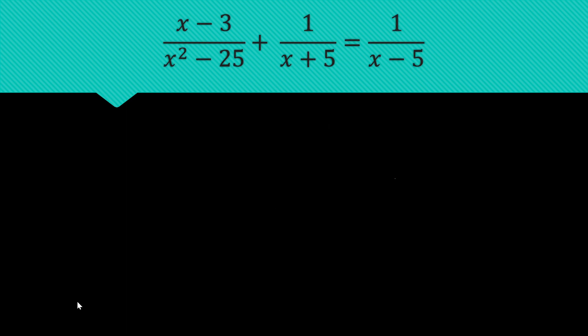So our next example would be x minus 3 over x squared minus 25 plus 1 over x plus 5 equals 1 over x minus 5. This looks like a complex equation and we can't just simply apply cross multiplication because as we can see, we have two rational functions added on the left side of the equation.